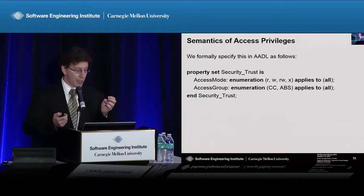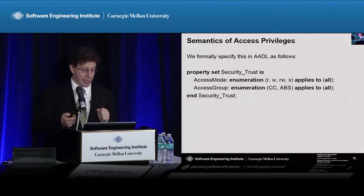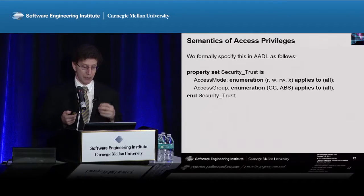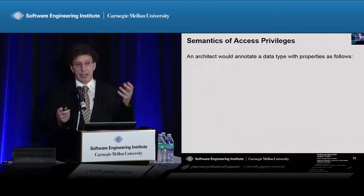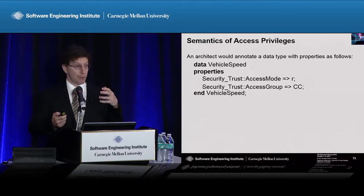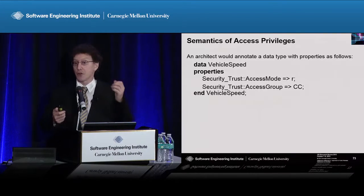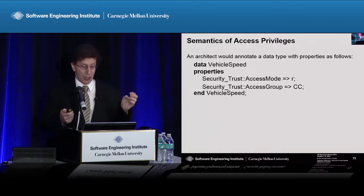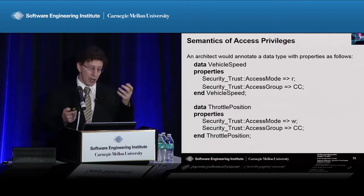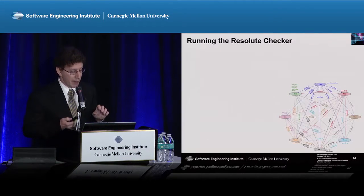We specify this in AADL by creating a property set called security trust, which consists of access mode — an enumeration of read, write, and execute — and access group, an enumeration of the set of systems allowed to access a particular piece of data. An architect can use that property to annotate data types in the system. The vehicle speed data, for example, would be annotated with a security trust property of access mode equals R and access group equals CC for cruise control. The throttle position has an access mode of write and the same access group of cruise control.